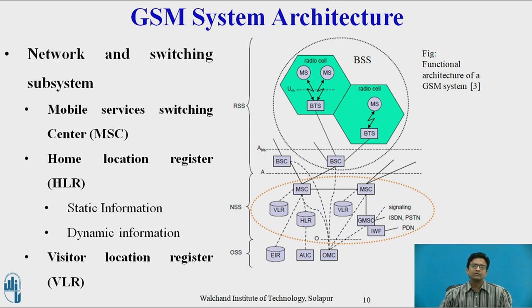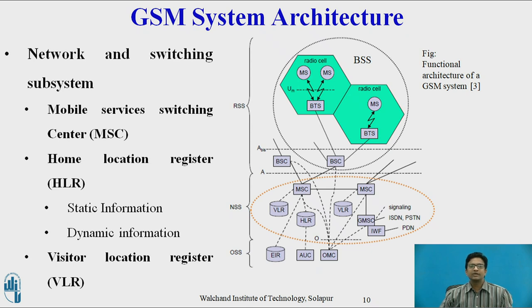VLR, the Visitor Location Register, is associated with each MSC — that is, in each MSC we have one VLR. The current location of the mobile station user, as associated to that MSC, is stored in the VLR. VLR copies all relevant information for the user from the HLR.